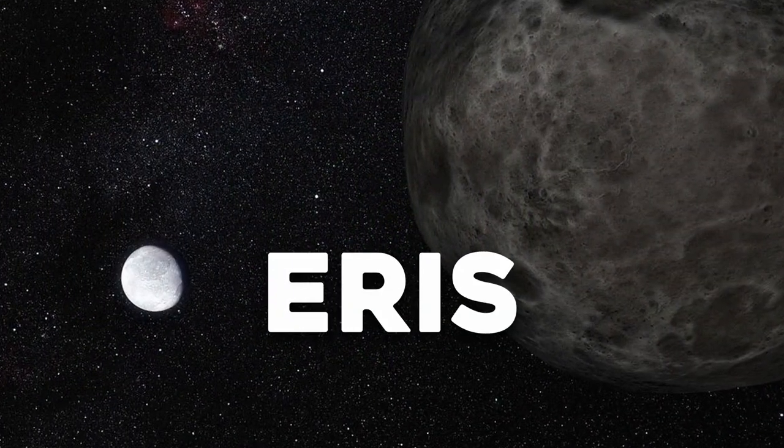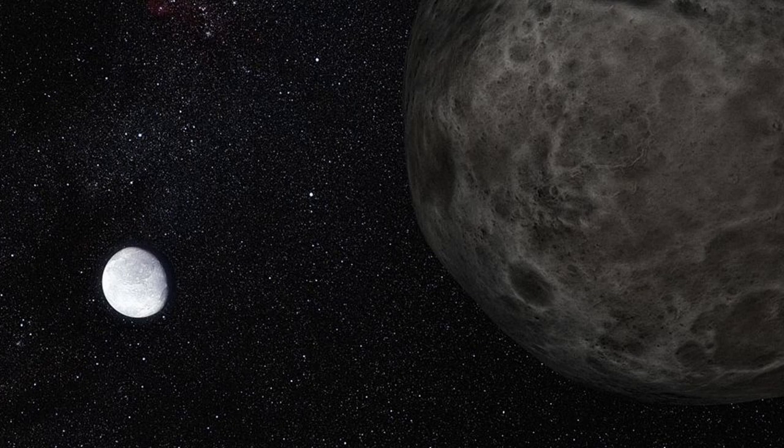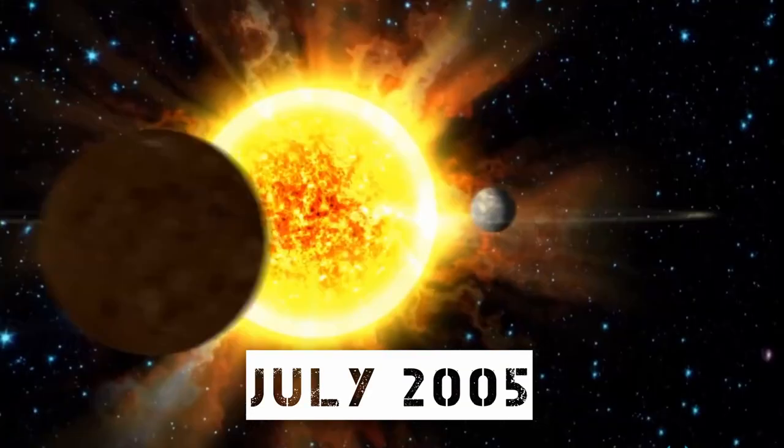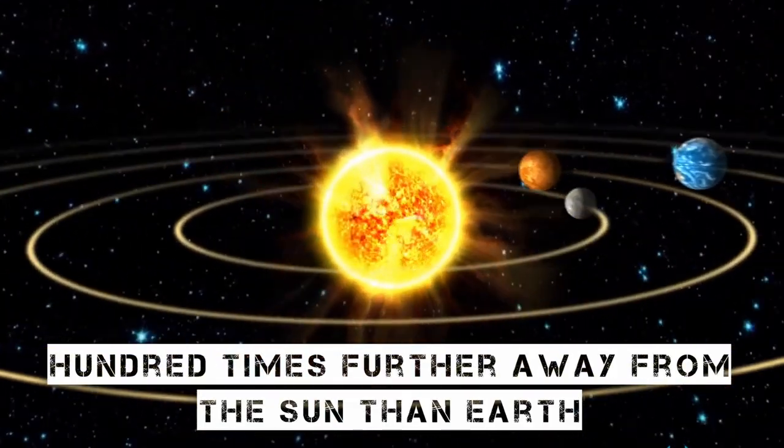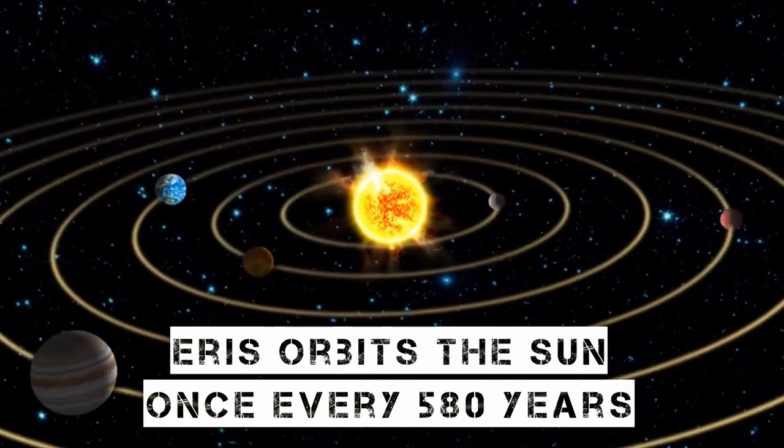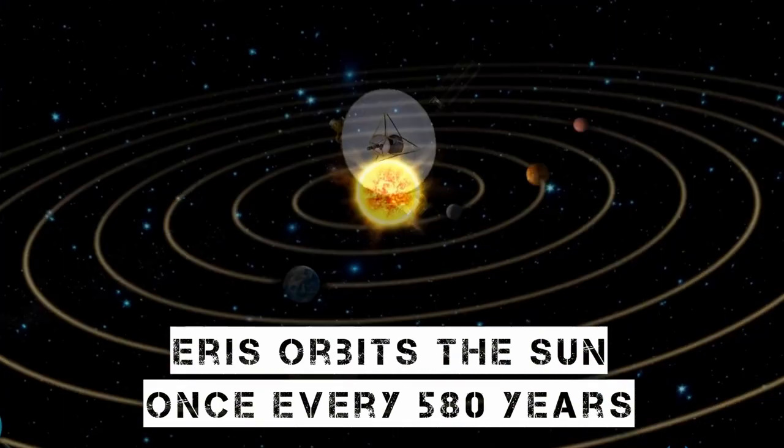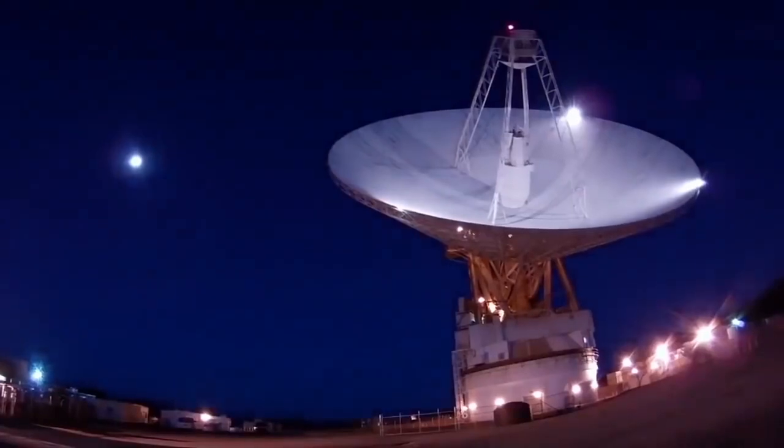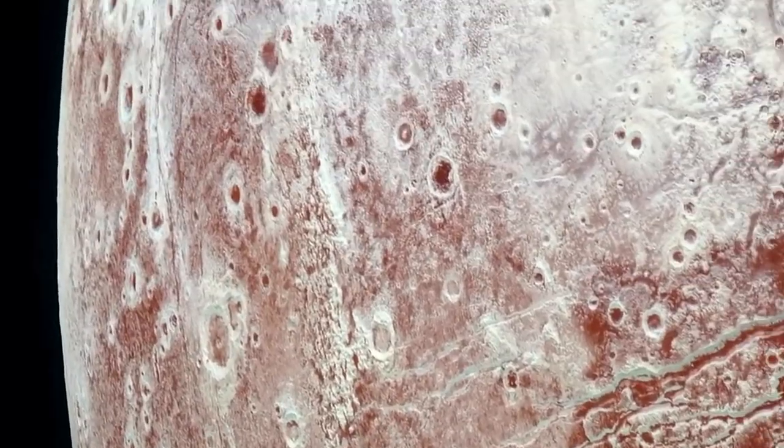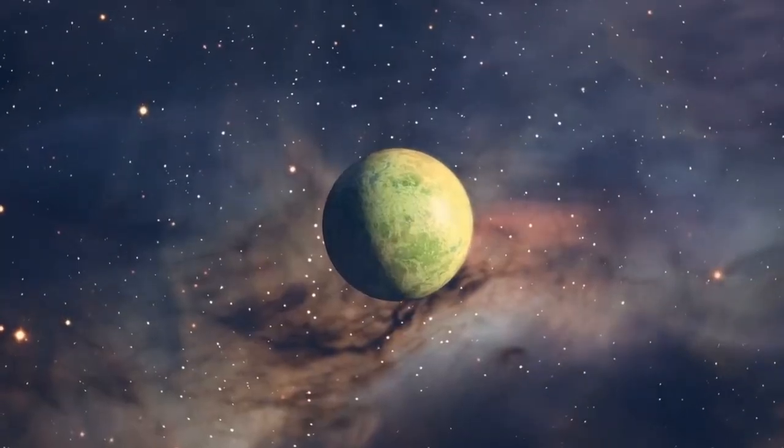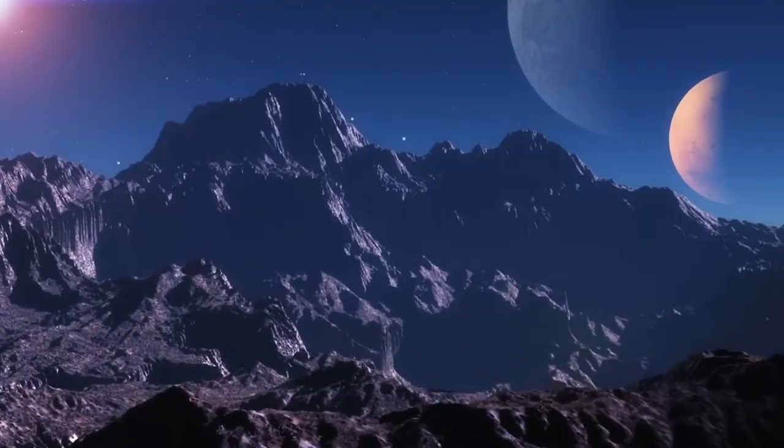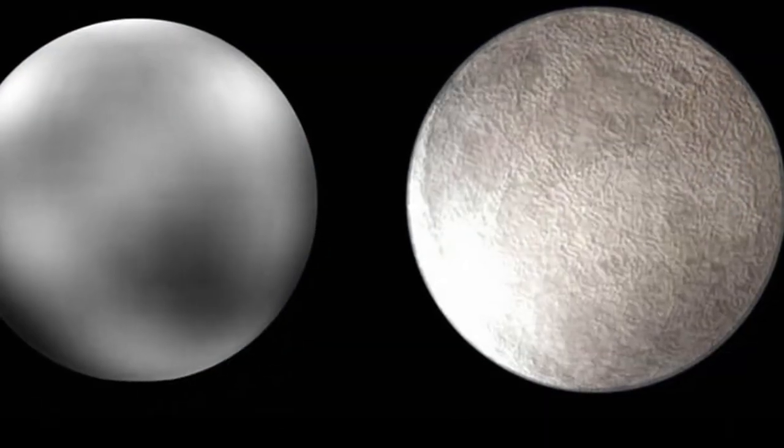Astronomers found Eris, a Kuiper Belt object that is somewhat smaller than Pluto, in July 2005. Nearly 100 times further away from the sun than Earth, Eris orbits the sun once every 580 years. Some scientists were made aware of the difficulty of classifying Pluto as a full-scale planet as a result of its discovery. A planet must be big enough with the Kuiper Belt surrounding them. Pluto and Eris had failed to do so.